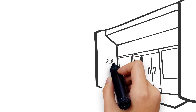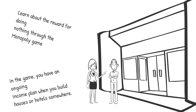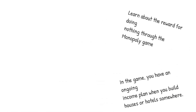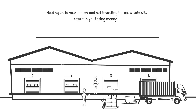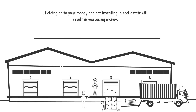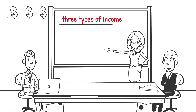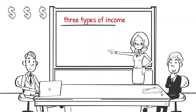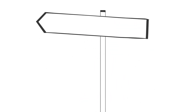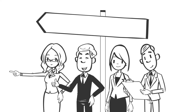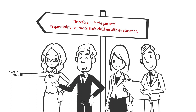You can learn about the reward for passive income through the Monopoly game. In the game, you have an ongoing income plan when you build houses or hotels — this is important for victory. Holding on to your money and not investing in real estate will result in you losing money. Your children will have money in the future if they know about the three types of income, however school alone cannot prepare them for this. Most teachers earn a normal salary and are experts in their fields, but many are unaware that there are three types of income. Therefore, it is the parents' responsibility to provide their children with a financial education.